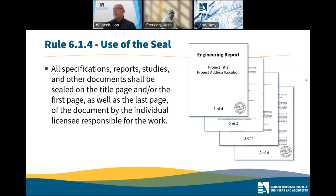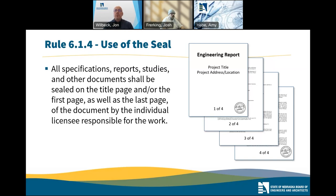Addressing a question: how does the board address changes in personnel on a project? For example, if the PE leaves the company towards the end of a project — in that case, there should be some discussion about transferring work and there should be a clear transition. Maybe a letter or something that becomes part of the project documents, noting that this PE or licensee prepared this work but had left, and now there's a new PE in charge of that work. There should be a paper trail showing the transfer of responsibility.